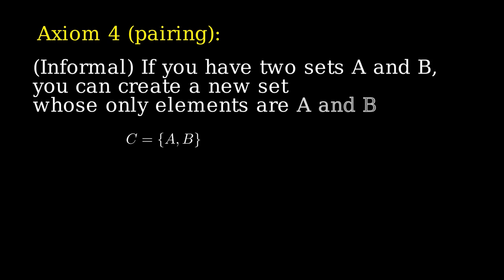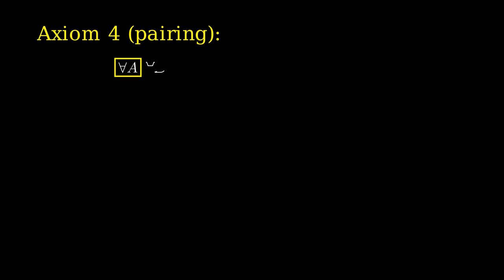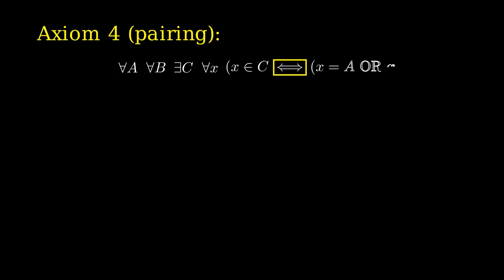Let's write axiom 4 formally: for every A and for every B, there exists C such that for every X, X belongs to C if and only if X is equal to A or X is equal to B.